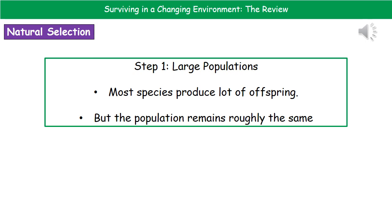The first step is all to do with large populations. Most species produce a lot of offspring. What we notice when we look at the numbers of these populations is that the population remains roughly the same, despite the fact they produce a lot of offspring. So the next question is: why does that happen?